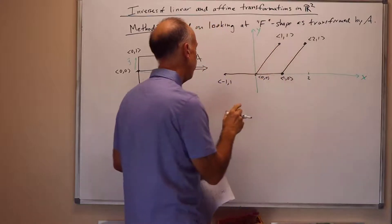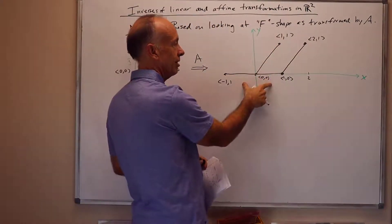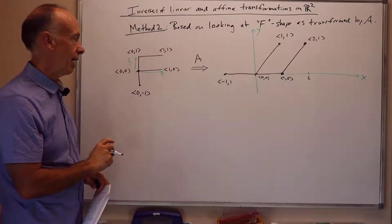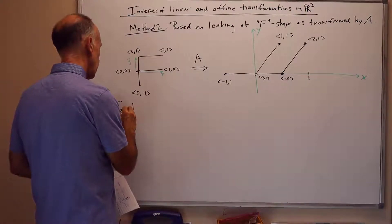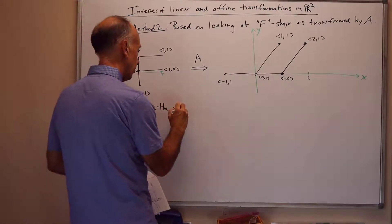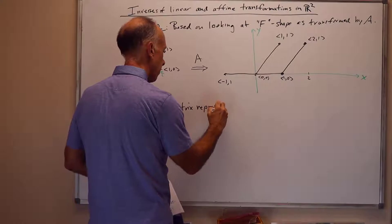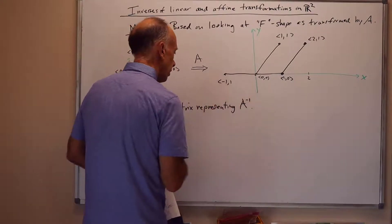And then we're going to fill in the F shape like this. And so, the F from standard position as mapped by A ends up looking like this F here with the coordinates as shown. And it's not hard to see this is consistent with a linear map. And our goal is to find the matrix representing A inverse.